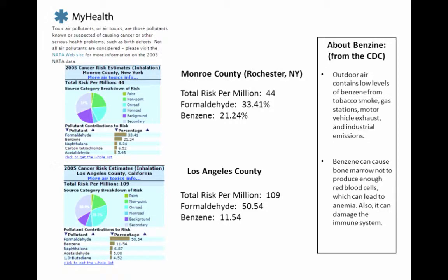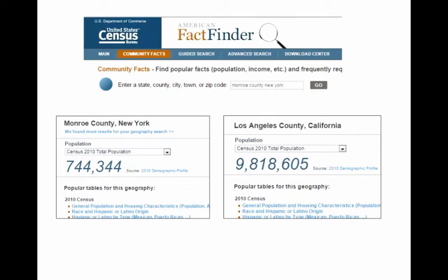They also have a My Health tool. I again compared Monroe County and Los Angeles County. Interestingly, Monroe County actually had double the level of benzene compared to Los Angeles County — I thought that was kind of interesting. I also included a slide from the census because it provides context: the population density is much, much higher in Los Angeles County, so it may be that LA's ecological footprint per capita is actually smaller than ours in Monroe County. That would take more research to figure out.